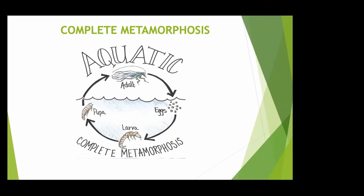Caddisflies go through complete metamorphosis, unlike mayflies and stoneflies. Eggs are laid near or in the water, and a larva hatches out. We call it a larva rather than a nymph because it has worm-like characteristics — six legs focused at the front of the body with a wormy back end, similar to caterpillars. 'Nymph' is a catch-all term for immature aquatic insects, but 'larva' specifically means it has those caterpillar-like characteristics and goes through complete metamorphosis.